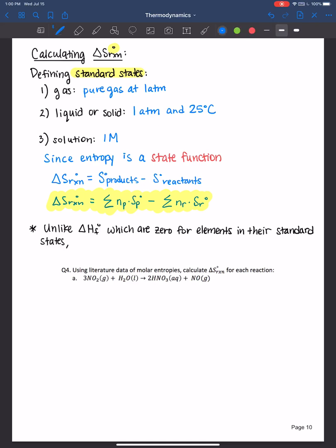Standard entropies are always non-zero at 25 degrees Celsius. We would need to have a perfect crystal at zero Kelvin in order to have something that would theoretically have zero amount of entropy. So everything will have entropy that you're working with here. We're going to be working mainly at 25 degrees Celsius for a lot of these calculations.